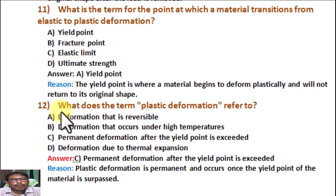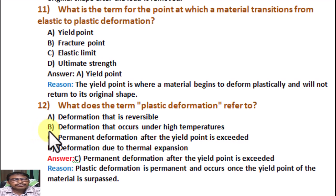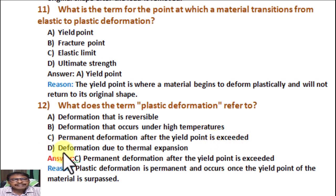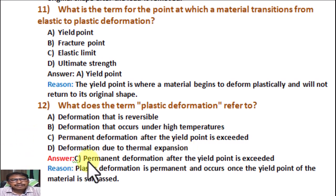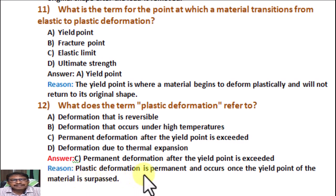Question number 12. What does the term plastic deformation refer to? Option A: Deformation that is reversible. Option B: Deformation that occurs under high temperature. Option C: Permanent deformation after the yield point is exceeded. Option D: Deformation due to thermal expansion. Correct answer is C: Permanent deformation after the yield point is exceeded. Reason: Plastic deformation is permanent and occurs once the yield point of the material is passed.